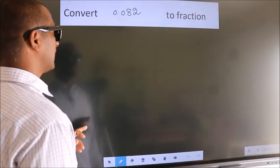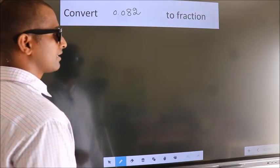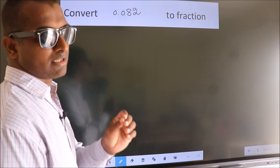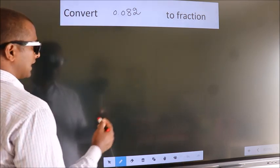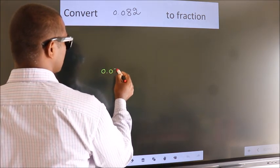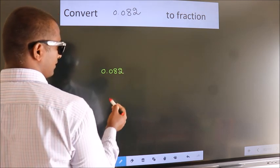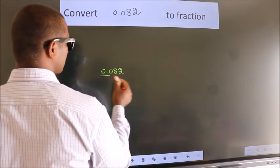Convert 0.082 to fraction. How do we convert? Given is 0.082. We now take it as 0.082 over 1.